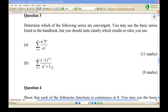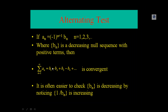Let's look at the statement of the alternating series test. It says that if a_n equals minus 1 power n plus 1 times b_n, where b_n is a decreasing sequence with positive terms, then the infinite series summation of a_n, which is an alternating series, is convergent. To test that b_n is decreasing, sometimes it's easier to show that 1 over b_n is increasing.